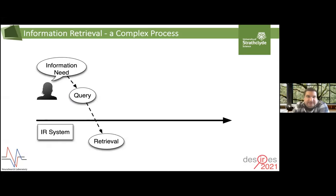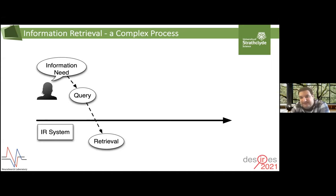Let's start by describing the complexity associated with the information retrieval process. The information retrieval process starts by researchers experiencing an information need. They then try to formulate the information into a query and submit it to a search system. The search system then uses that query, matches it to the documents, and retrieves a set of relevant results. The user then engages with the retrieved results and tries to satisfy the need.